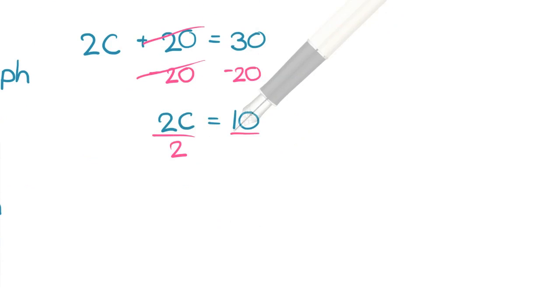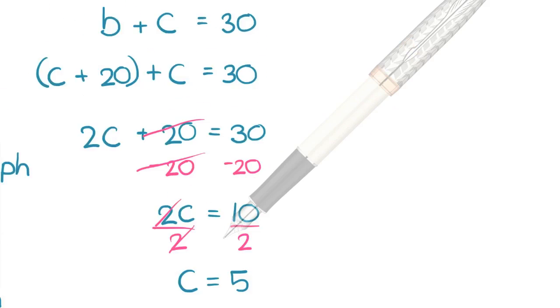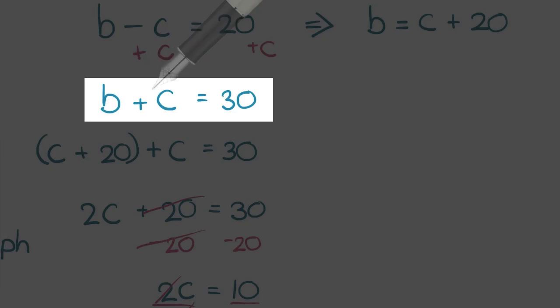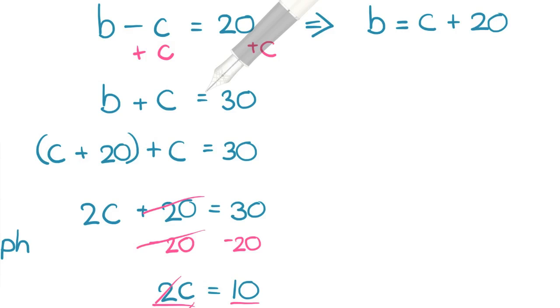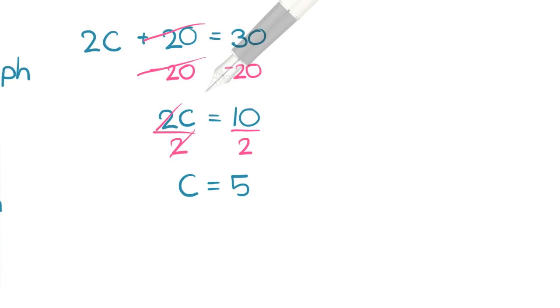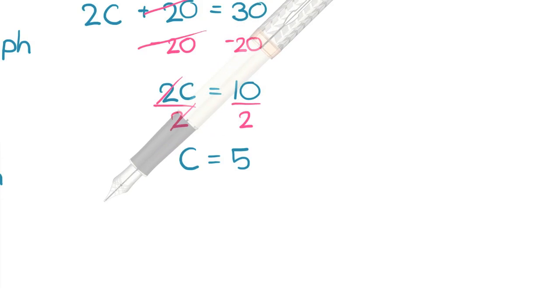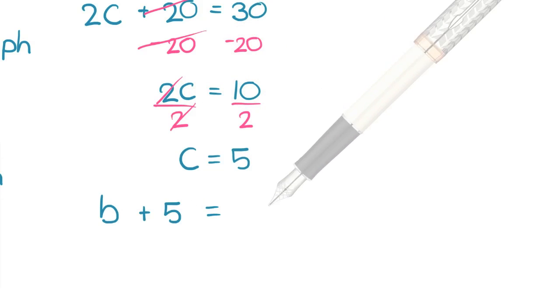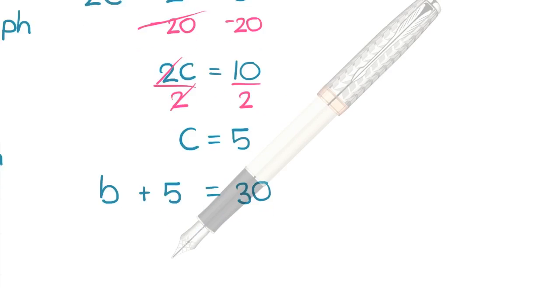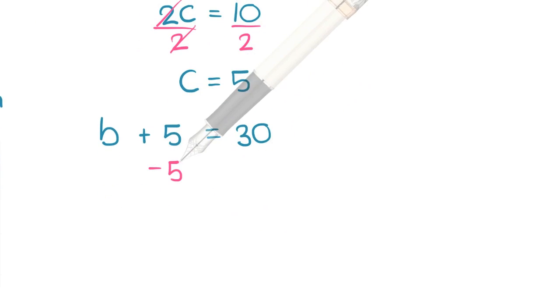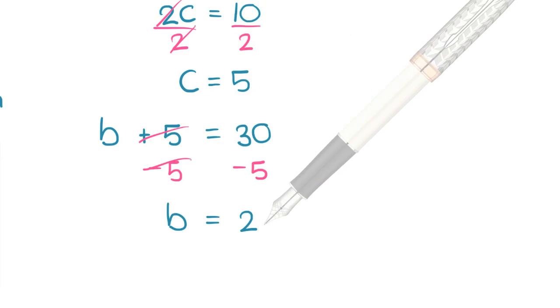Divide both sides by 2 and c equals 5. Now back substitute into b plus c equals 30, so b plus 5 equals 30. Solve for b. Subtract both sides by 5. We get b equals 25.